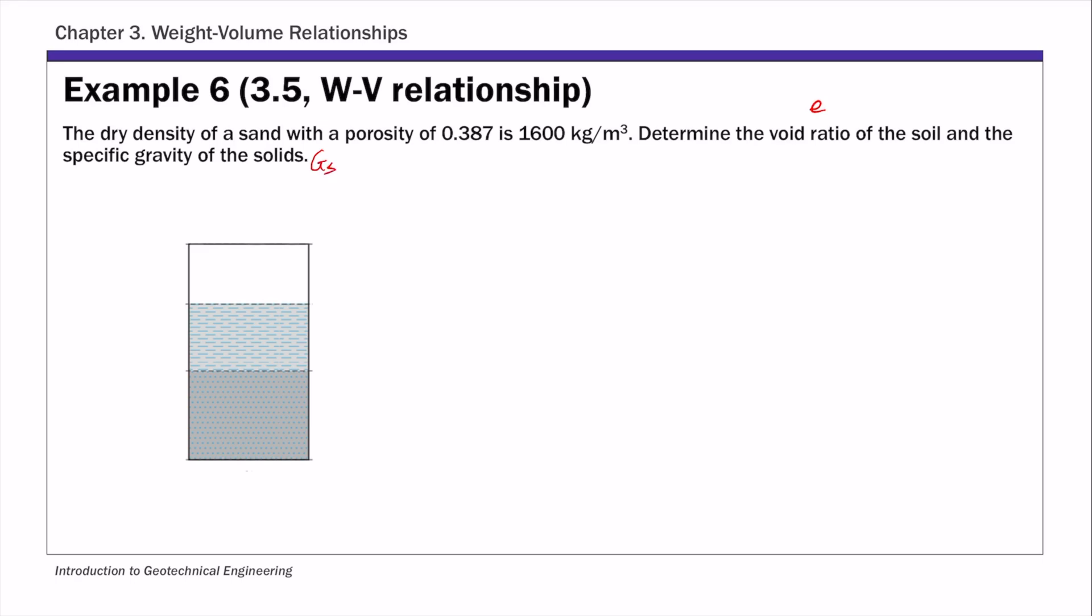For this problem, again we're going to use the phase diagram. For this example, it's actually not specified whether this is moist, saturated, or completely dry sand. So I'm going to just use the three-phase diagram here, but actually it doesn't matter what you put for air and water in this case. So we have the solid, and then we have air and water, and together these two phases occupy the voids.